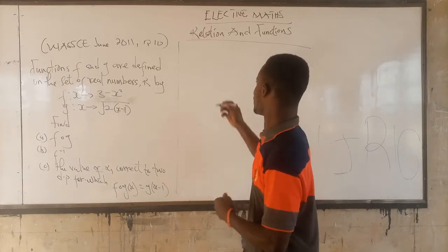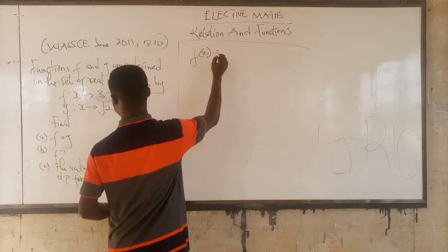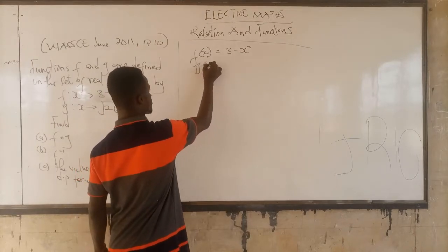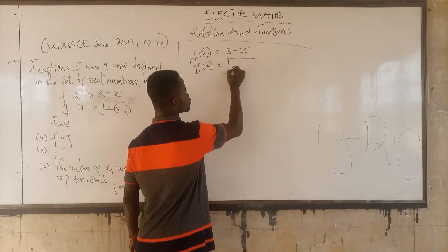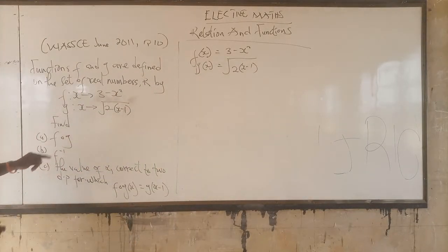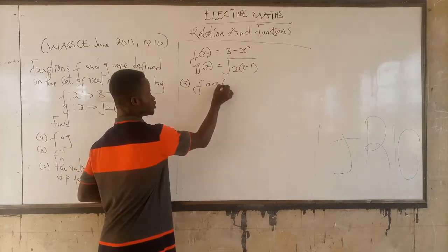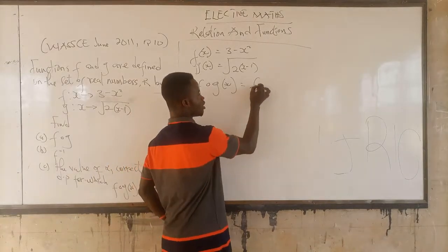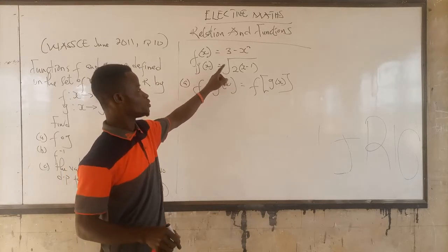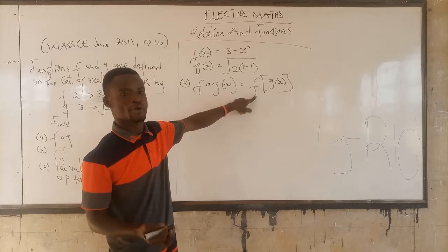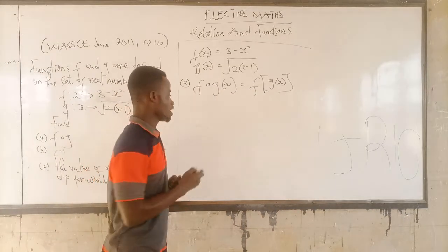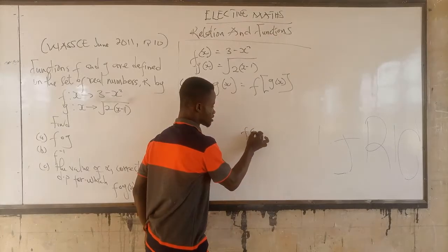We know from the question that f(x) = 3 minus x squared, and g(x) = 2x minus 1. If we are asked to find fog, which is f of g(x), what this means is that we look at the function f, but wherever we see x in f, we put g(x) there.